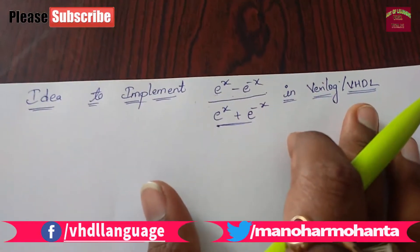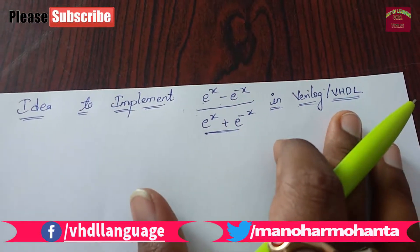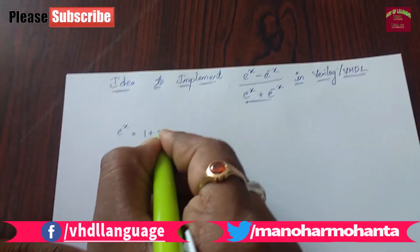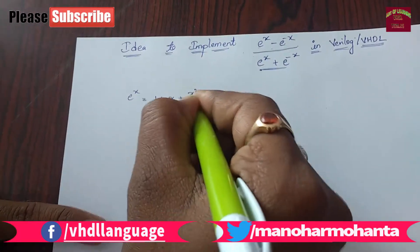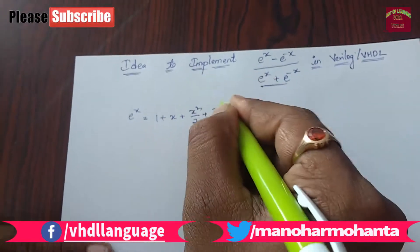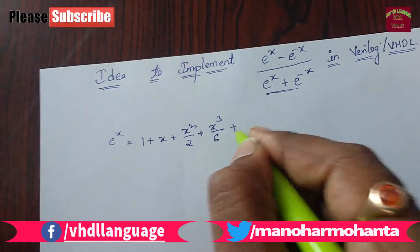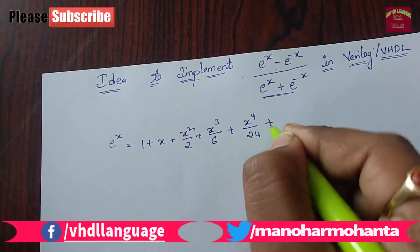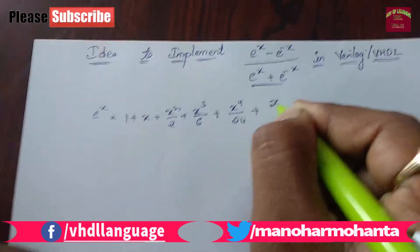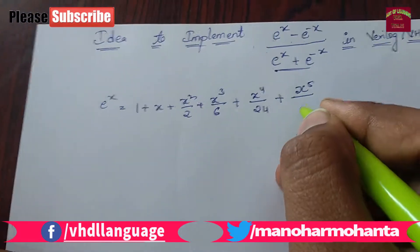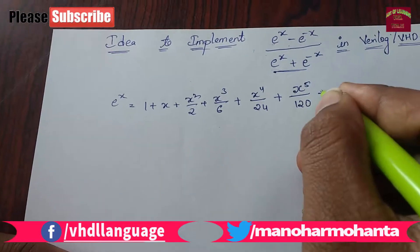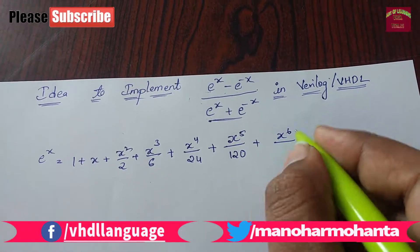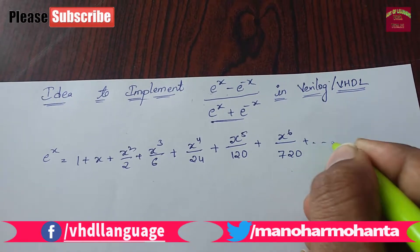So for that we require a coding style. Basically in my previous video you have seen e power x equals to 1 plus x plus x square by 2, x cube by 3 factorial which is nothing but 6, x power 4 — 4 factorial is nothing but 24, x power 5 — 5 factorial is nothing but 120, and next is x power 6 — 6 factorial is nothing but 720, plus and so on.